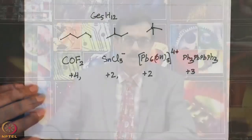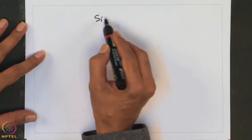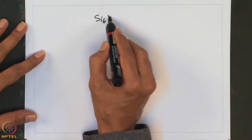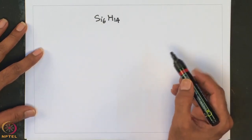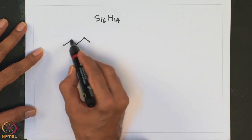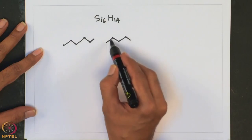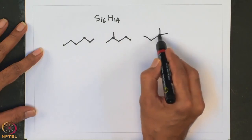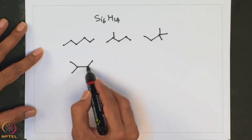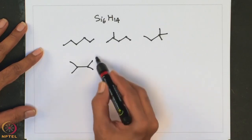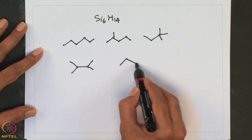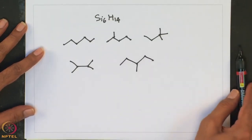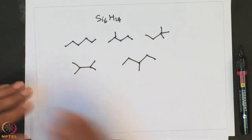Similarly, one can write the possible isomers for a silane of composition Si6H14 — hexasilane. One can write: the straight chain isomer (1,2,3,4,5,6), a branched isomer with branch at position 2, another branched isomer, and further branched arrangements — so totally 5 possible isomers for hexasilane, very similar to the situation for hexane as an organic molecule.